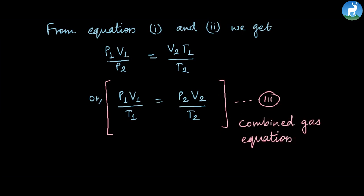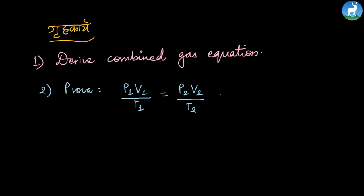The combined gas equation can be generalized as PV divided by T equals constant. This shows the relationship between pressure, volume, and temperature. This is equation 4.